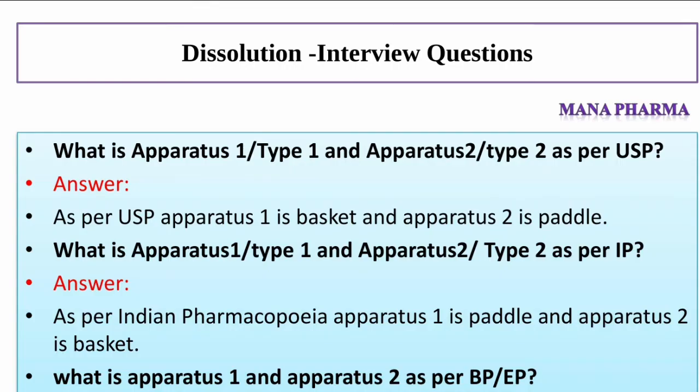What is apparatus 1 and apparatus 2 as per USP? Answer: As per USP, apparatus 1 is basket and apparatus 2 is paddle. What is apparatus 1 and apparatus 2 as per IP? Answer: As per Indian Pharmacopoeia, apparatus 1 is paddle and apparatus 2 is basket.